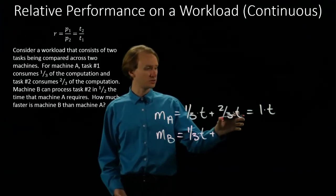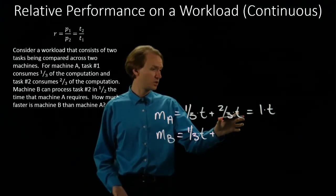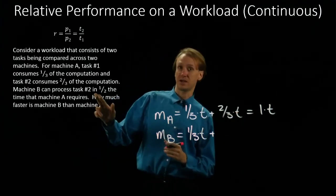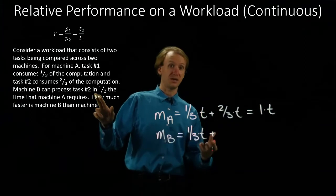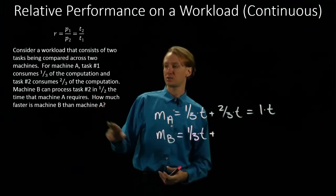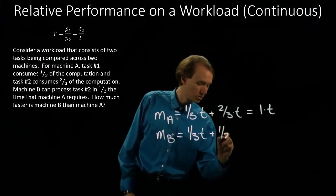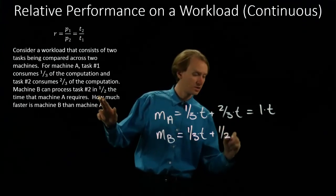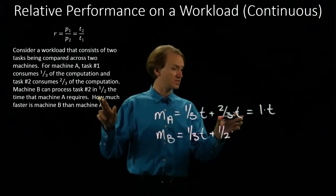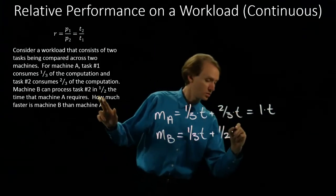Now machine A spent the other two-thirds of its time on task two, but machine B is better at this task. So we expect it's going to take less time. How much less? Half as much. So pull in the one-half, and we have the same amount of work that we had before.